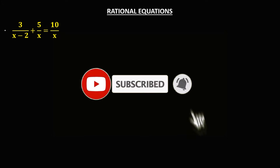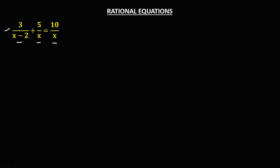So let's solve this problem. In solving rational equations with different denominators, first we need to find the LCD. To find the LCD, write the first denominator, that's x minus 2, then times the second denominator, so times x, then times the third denominator. Since the third denominator is x and we already have x, there's no need to add this third denominator.